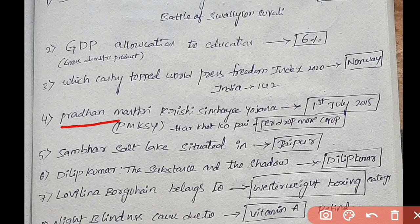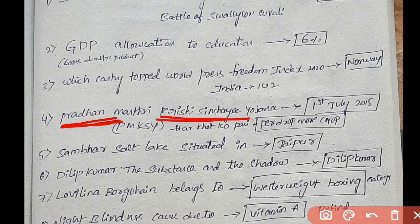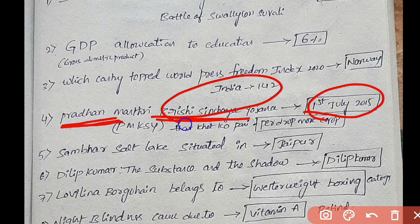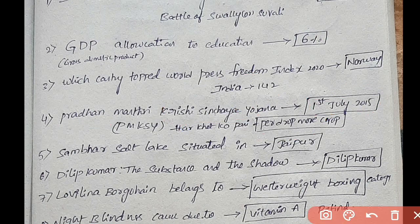Next question on central schemes: Pradhan Mantri Krishi Sinchai Yojana — 'Per Drop More Crop' — was launched on 1st July 2015.